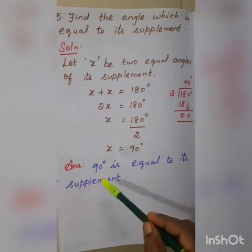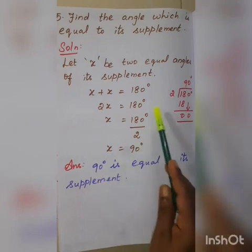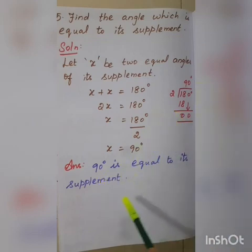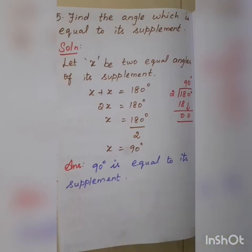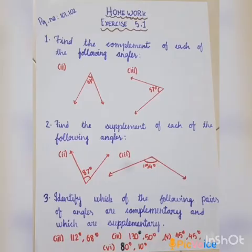So 90 degrees plus 90 degrees is 180 degrees. The answer is 90 degrees is equal to its supplement. Dear students, today's homework is Exercise 5.1, page number 101 and 102, first sum, second sum, third sum. Do your homework properly. Thank you.